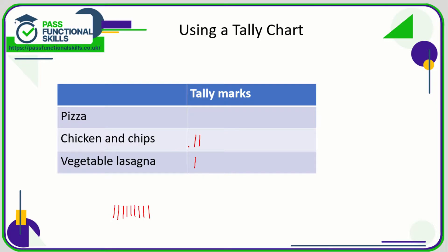So what we do is we put them in bunches of five. If the next student wants chicken and chips, and the student after that also wants chicken and chips, and the next one also wants chicken and chips — now this one will complete a group of five. So rather than doing another vertical strike, we do a diagonal one to bunch it into five. You go around the class and maybe at the end your tally chart looks something like this.